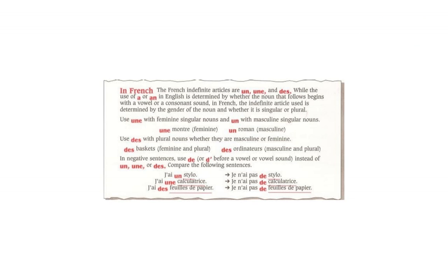The French indefinite articles are un, une, and des. While the use of 'a' or 'an' in English is determined by whether the noun that follows begins with a vowel or a consonant sound, in French, the indefinite article used is determined by the gender of the noun and whether it is singular or plural.